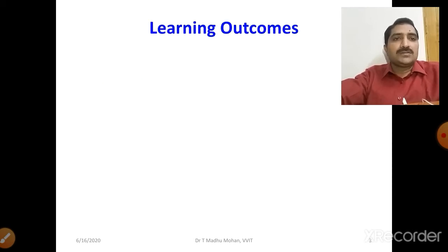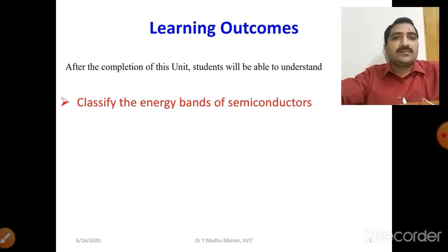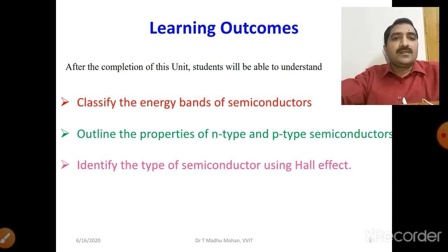Learning outcomes: after the completion of this unit, students will be able to classify the energy bands of semiconductors, outline the properties of n-type and p-type semiconductors, and identify the type of semiconductor by using the Hall effect.